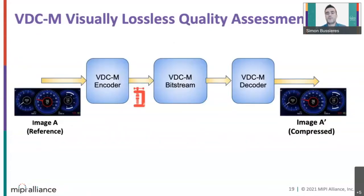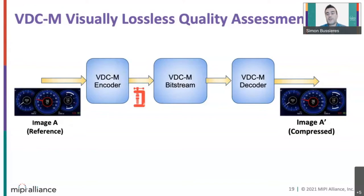How do we proceed with visual quality assessment? First, we need to work with two images. The first one is what we call the reference image, which is the original uncompressed image. Then we need to create the compressed image, which is the resulting image after compression and decompression steps. Either a software tool available from VESA or a hardware implementation of VDCM capable of real-time encoding and decoding can be used to create the compressed image.